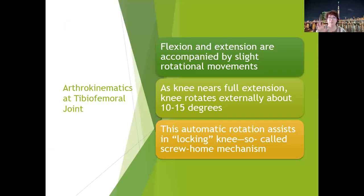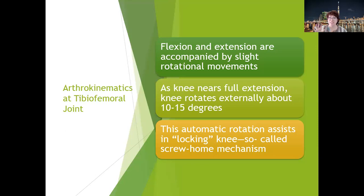Flexion and extension are accompanied by slight rotational movements. As the knee nears full extension, the knee rotates externally about 10 to 15 degrees. This automatic rotation assists in locking the knee and is called the screw-home mechanism.